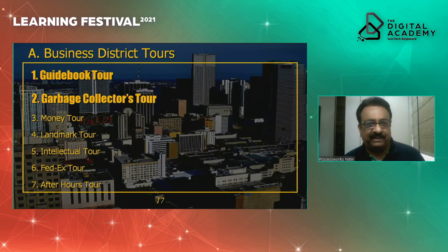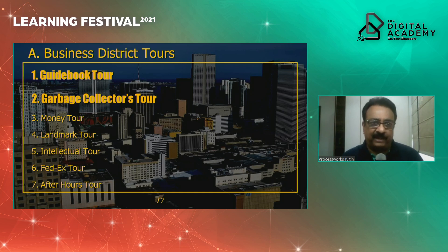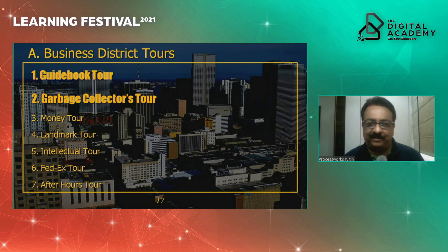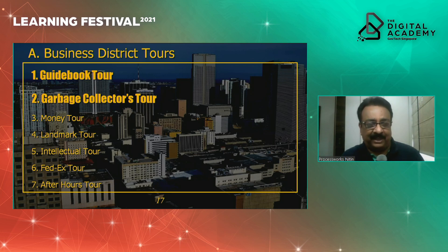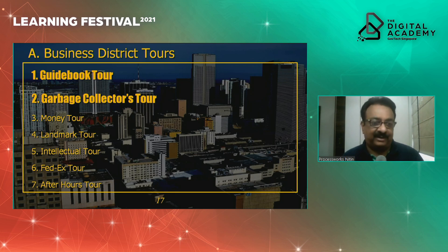This district is where the collection of the most important features from the organization's point of view are put together. Naturally, the tester must make sure we check them. As part of the Business District tours, seven tours are given. We will cover the first two: guidebook tour and garbage collector's tour. The other tours include money tour, landmark tour, intellectual tour, FedEx courier tour, and after hours tour — all very interesting names.